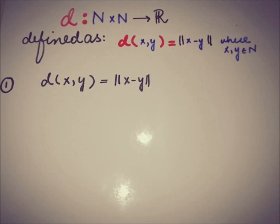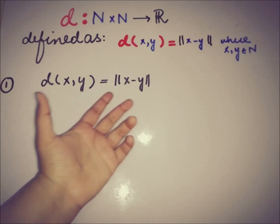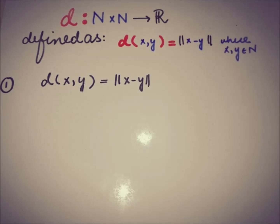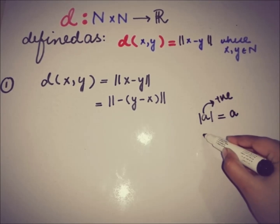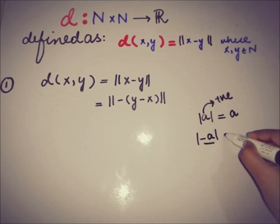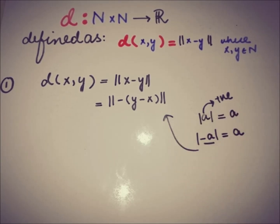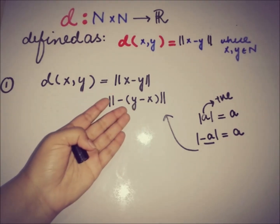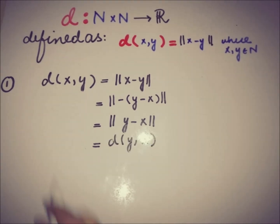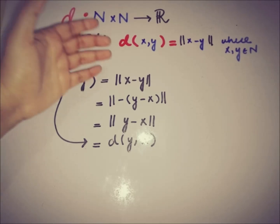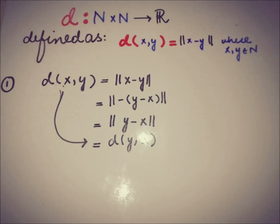The second property is symmetry. We have d(x, y) = ||x - y||. Taking the negative sign common gives ||-(y - x)||, and since the norm of a negative element equals the norm of the element itself — analogous to |(-a)| = |a| — this equals ||y - x|| = d(y, x). Therefore d(x, y) = d(y, x), and the symmetry property is satisfied.